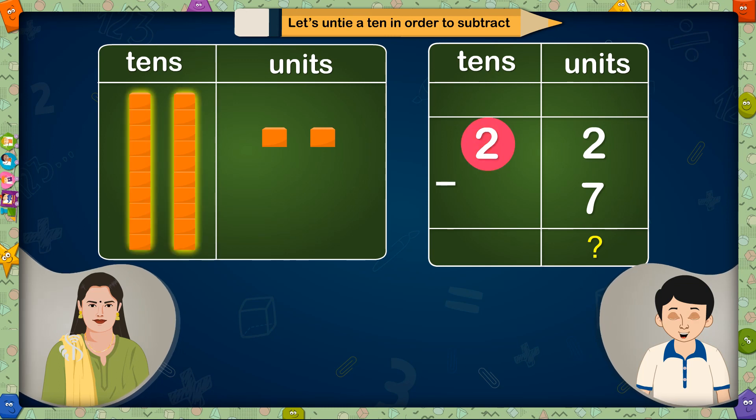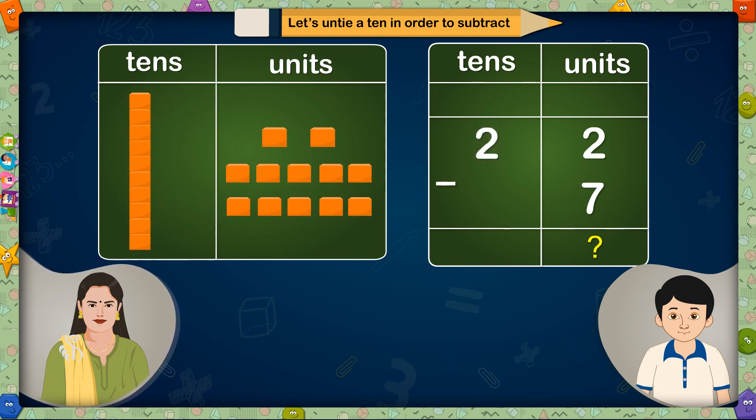We will have to untie 1 ten from these 2 tens. Right! How many units will be there after untying 1 ten? And how many tens will be left? There will be 10 plus 2 is equal to 12 units altogether and only 1 ten will be left if we untie 1 ten from 2 tens.